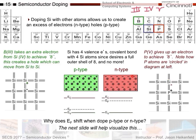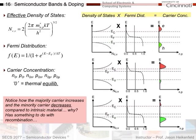The band diagrams have changed a little bit for doped material. For P-type material, the Fermi level has shifted down from the center. For N-type material, the Fermi level has shifted up from the center point between the conduction and valence band. The next slide will help visualize why the Fermi level has to shift in each case.